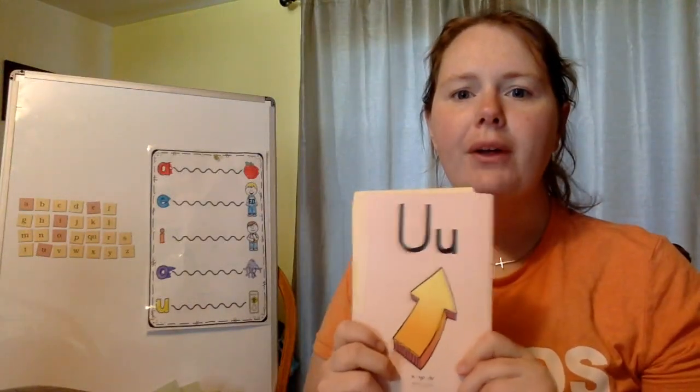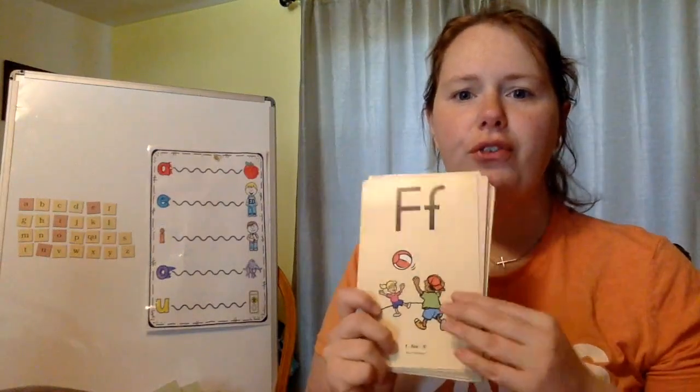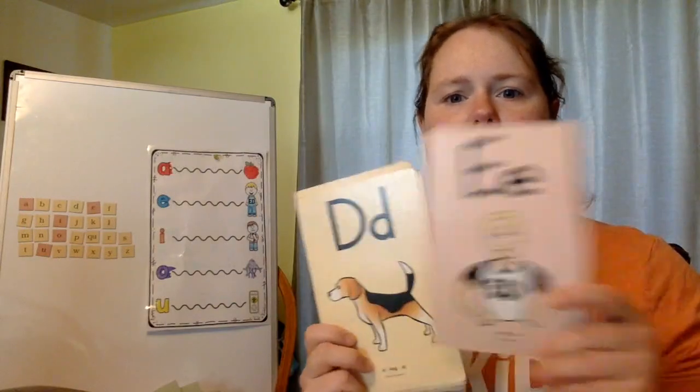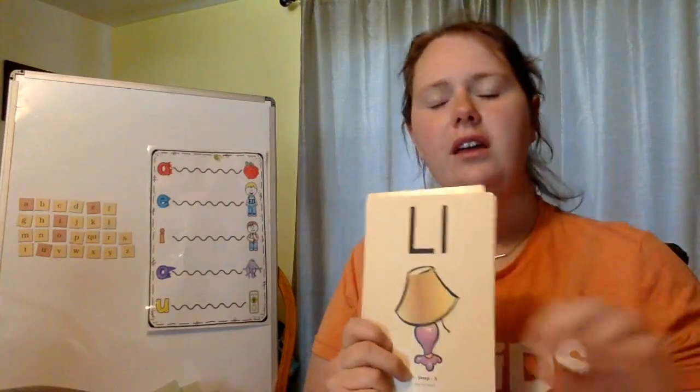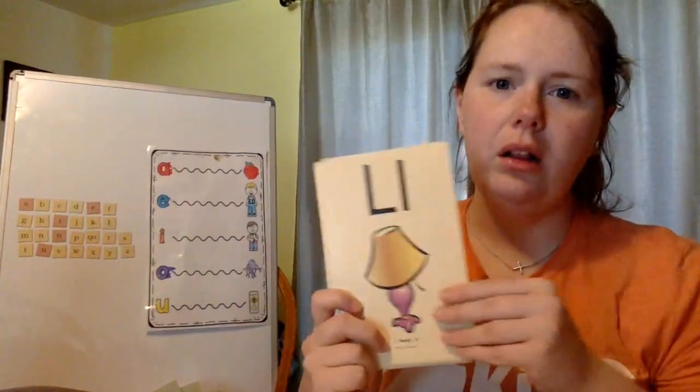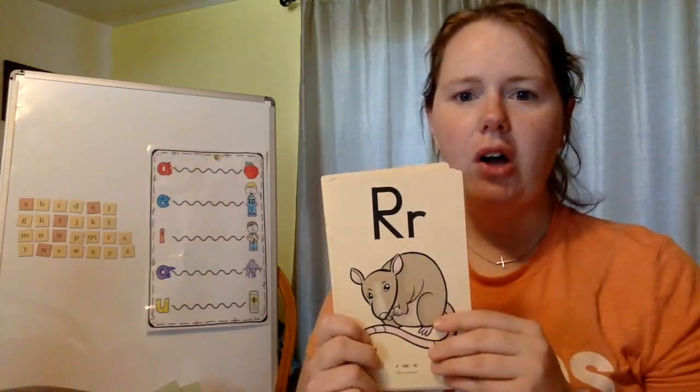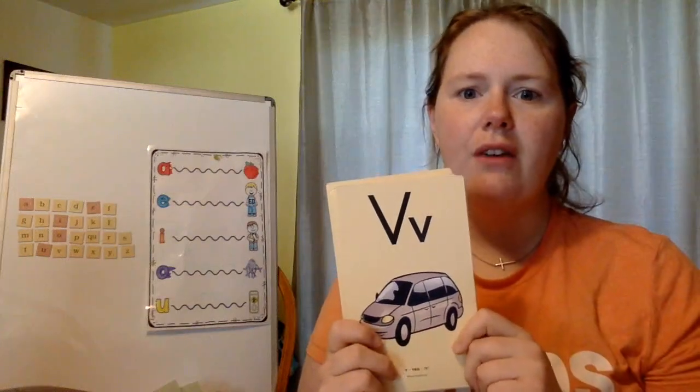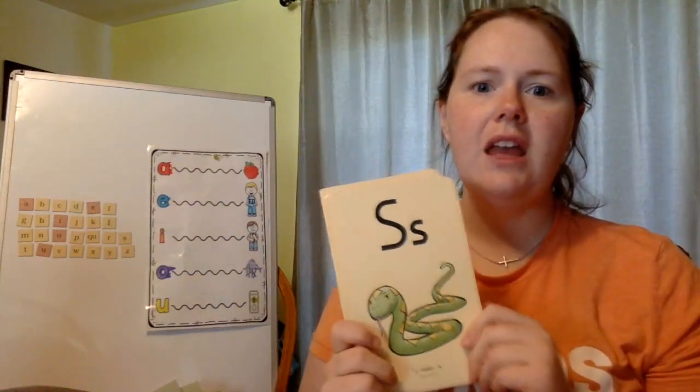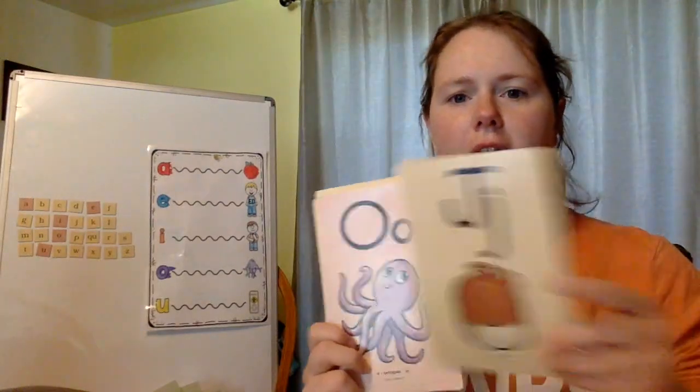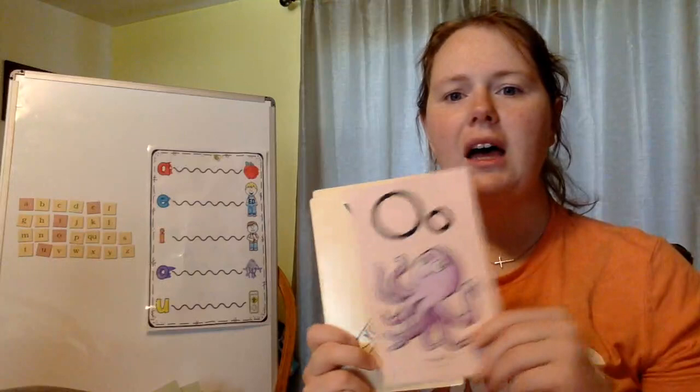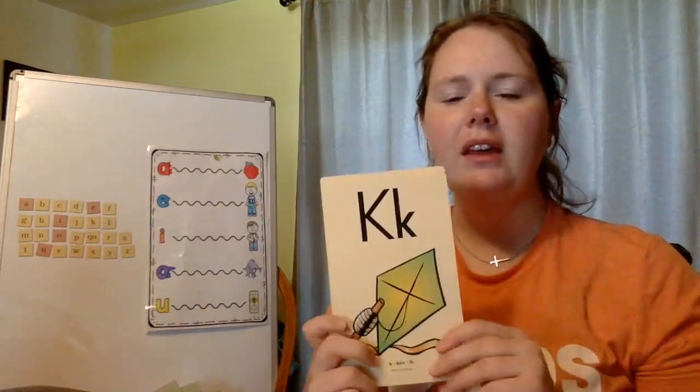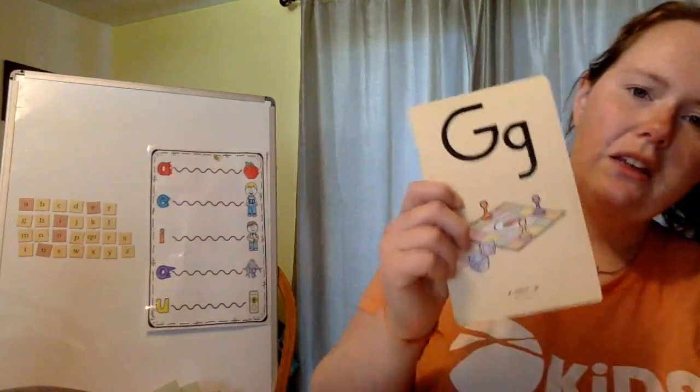U, uh, uh. F, fun, f. E, ed, e. D, dog, d. L, lamp, ll. W, wind, w. I, itch, i. R, rat, ur. H, hat, h. V, van. S, snake, sss. N, nut, n. J, jug, j. O, octopus, ah. Y, yellow, y. K, kite, k. G, game, g.